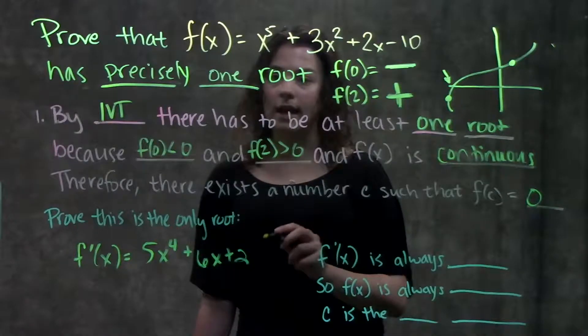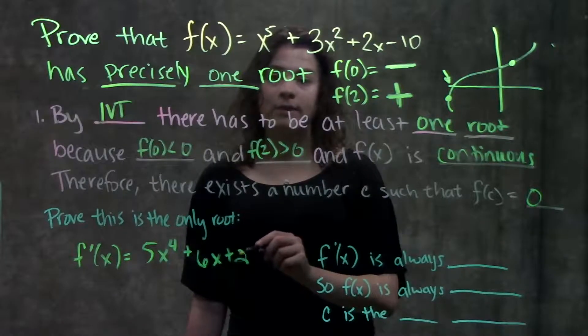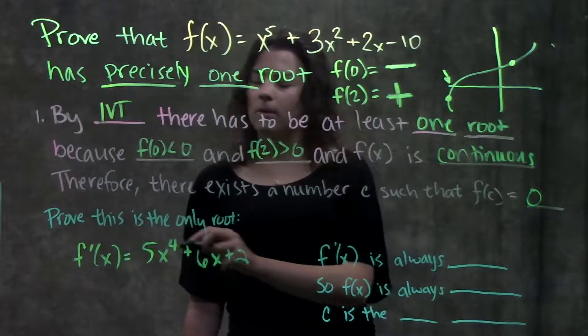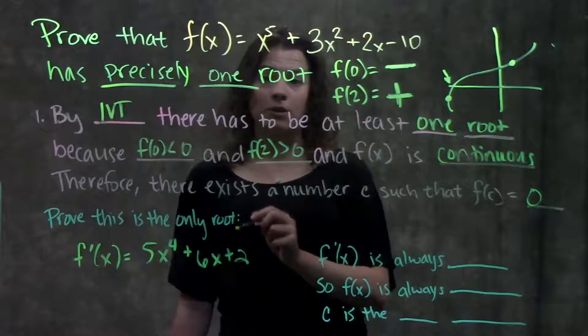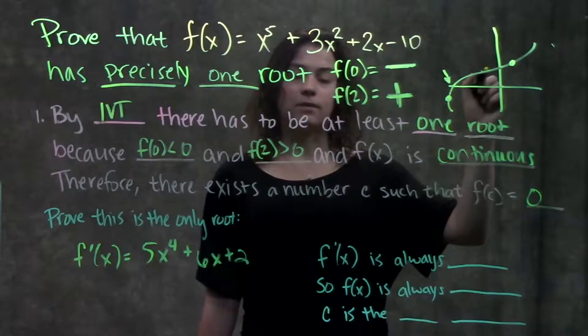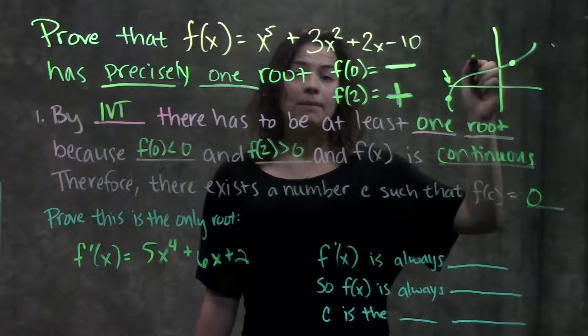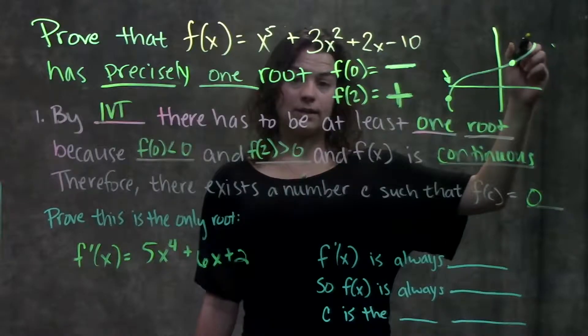Well, if we can check the sign of the derivative, the derivative will tell us whether this function is increasing or decreasing. Remember, because the derivative is the slope of the tangent line at a specific point, if the slope is always positive of that tangent line, that means that this function is always increasing.